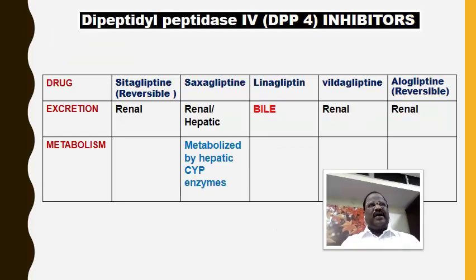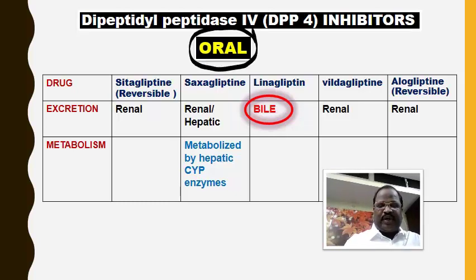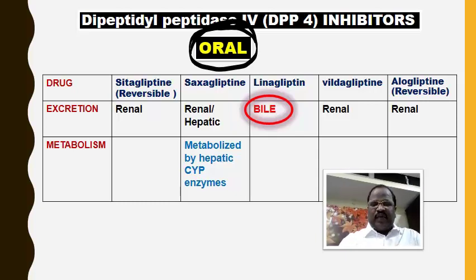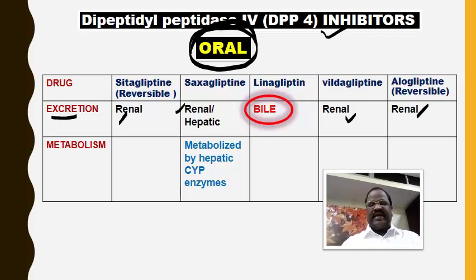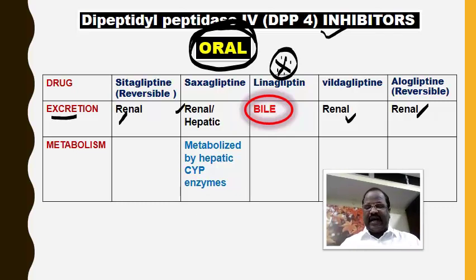All DPP-4 inhibitors are given orally — this is very important. Another important MCQ point about excretion: most DPP-4 blockers undergo excretion via the kidney. The exception is linagliptin — it is the one and only DPP-4 inhibitor that undergoes excretion by bile. Therefore, linagliptin is safe in kidney failure. This is a very popular MCQ question.